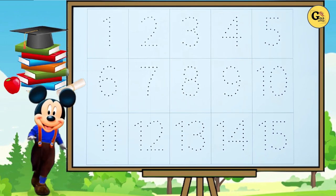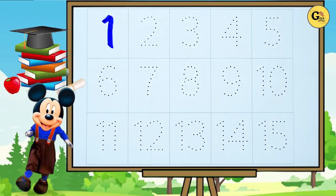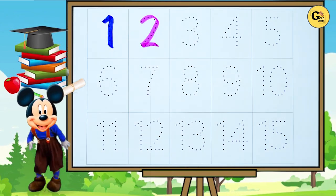One, one with blue color. It's one. Two, two with pink color. It's two.